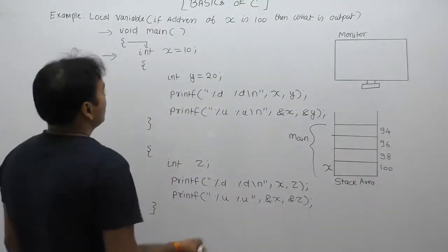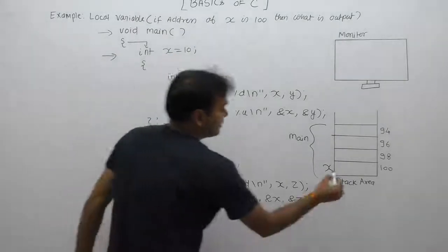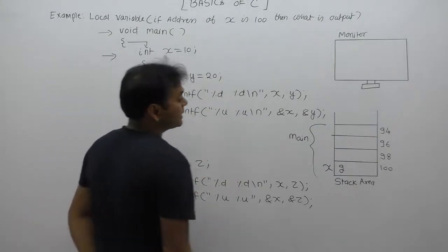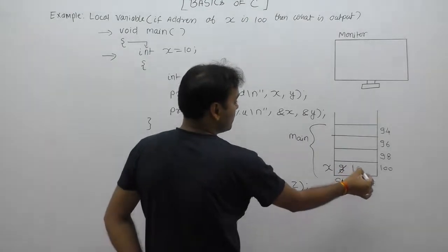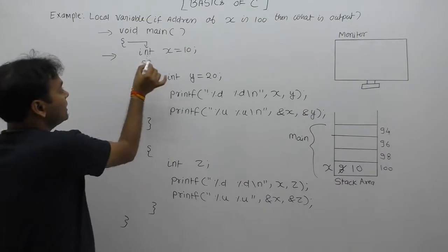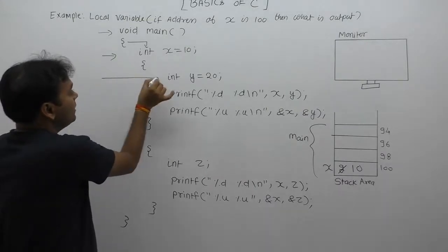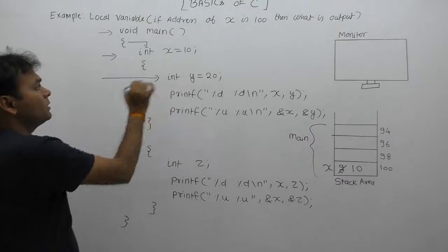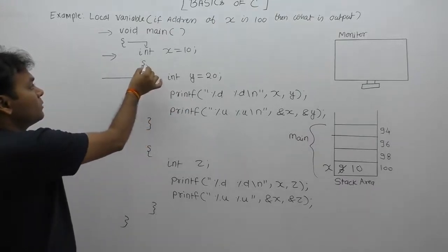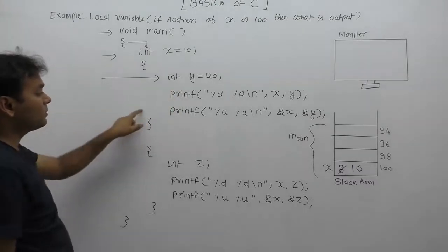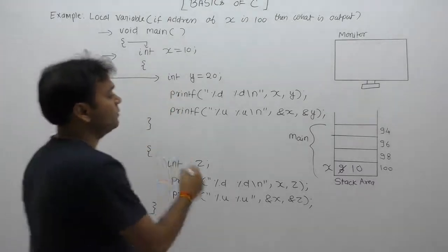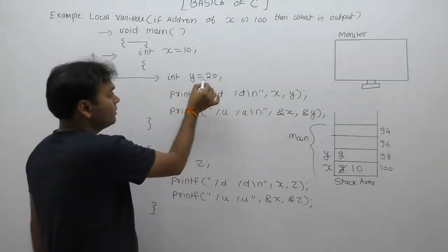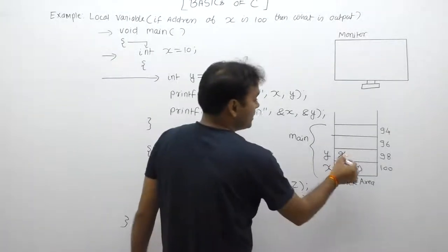Next, what about the remaining variables? The default initial value of x is garbage. After the control moves inside the inner block, memory allocation is performed for the local variables of the inner block, meaning for y. Memory allocation for y will happen when control enters the inner block, and deallocation will happen when control exits the inner block. First of all, we are performing memory allocation for y with the initial value garbage, but after execution of the assignment statement, y is initialized by 20.